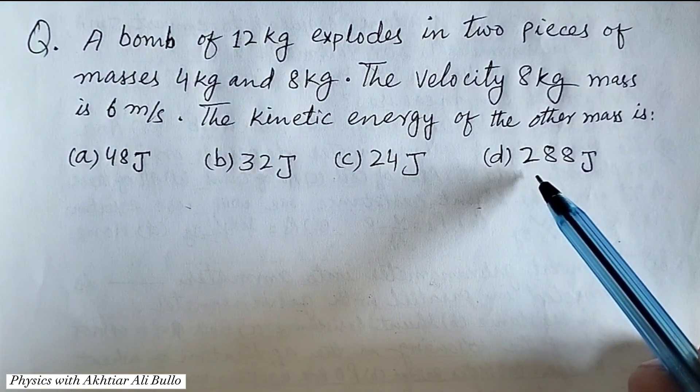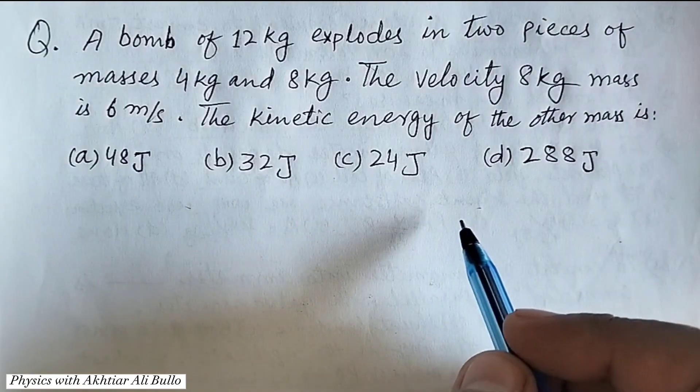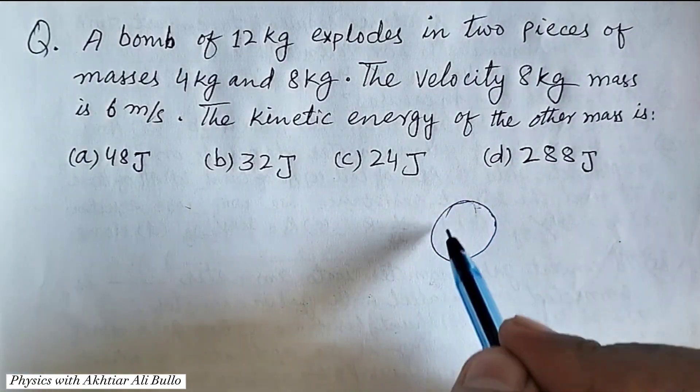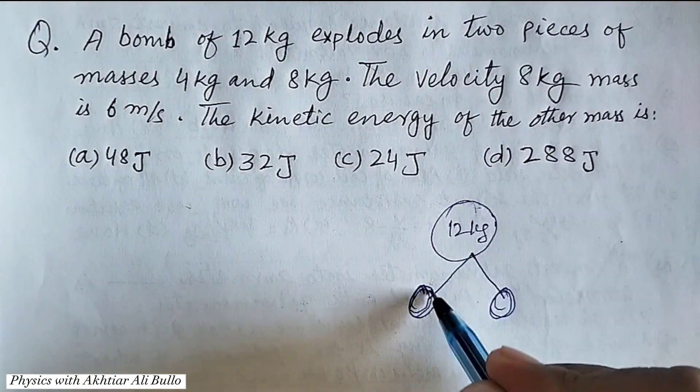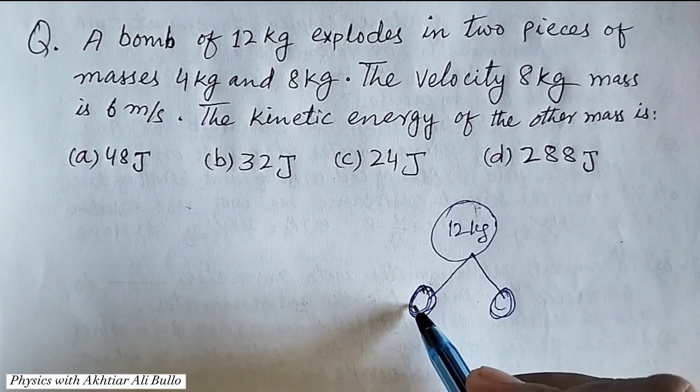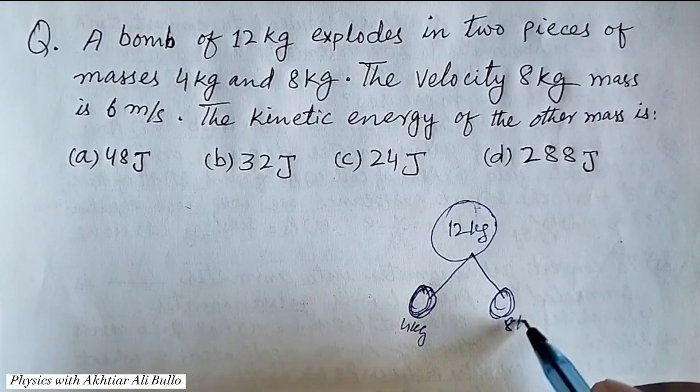(d) 288 joule. The mass of the bomb is 12 kg, when it explodes it breaks into two pieces of 4 kg and 8 kg.